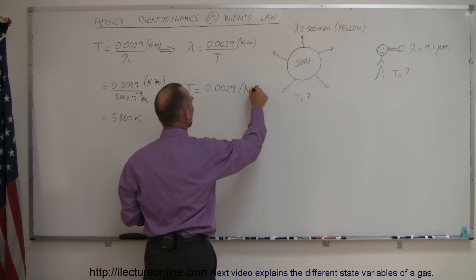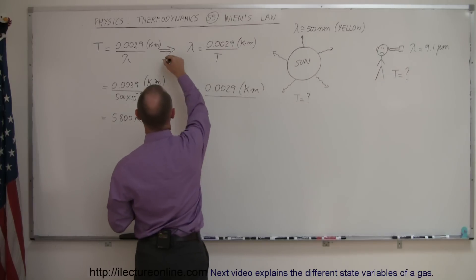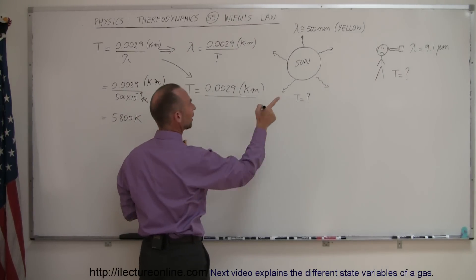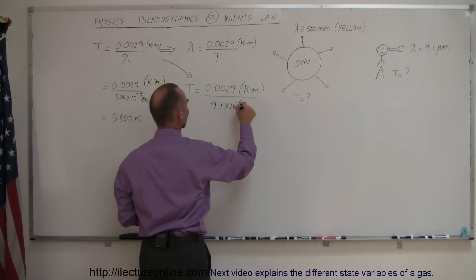But let's say that we want to know how that works. So we divide that by the wavelength and of course we're still using this equation right here. The wavelength 9.1 micrometers or 9.1 times 10 to the minus 6 meters.